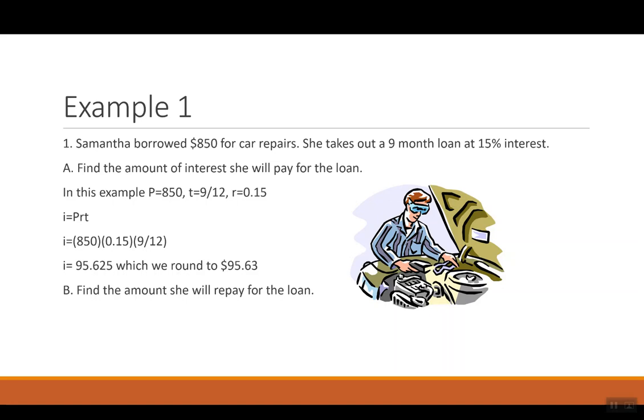Now we can do part B, finding the amount she will repay for the loan. So when she repays the loan, she has to pay both the amount she borrowed, $850, plus the $95.63 she pays in interest, which is the fee for borrowing the money. So together when it's time to pay, she's going to pay $945.63.